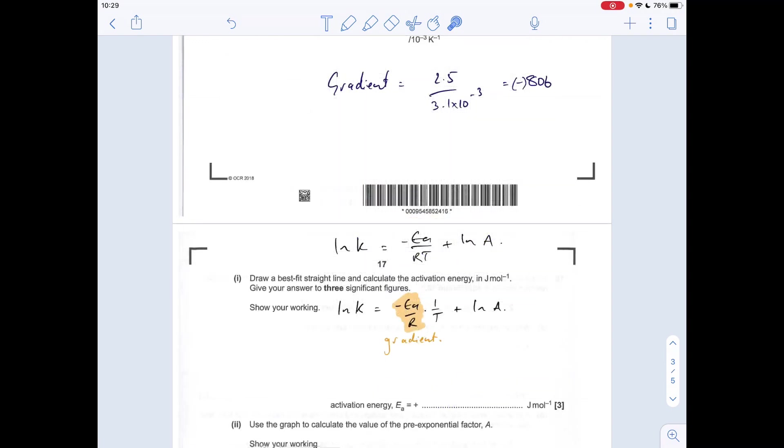So to get the activation energy, we need to use the natural log form of the Arrhenius equation, which is on the datasheet. It's written like that. If you've watched my video on when I explain or teach the Arrhenius equation, I put it in that form as well because I think putting it that way, you can actually see the Y equals MX plus C more clearly. And then that M term there, the minus Ea over R, that's your gradient. So we're going to solve now to calculate Ea, activation energy.